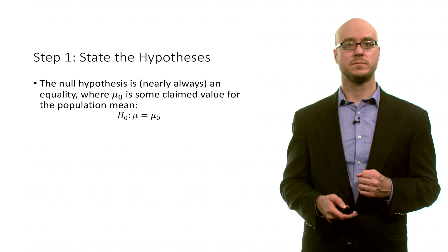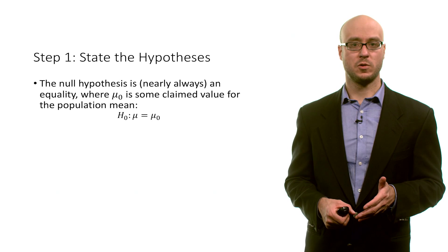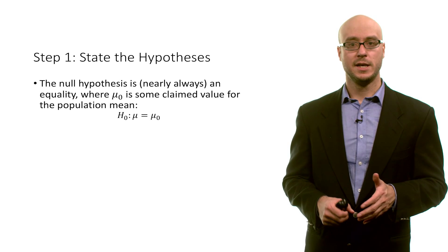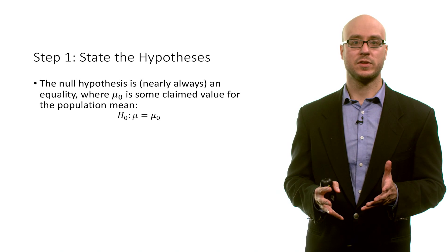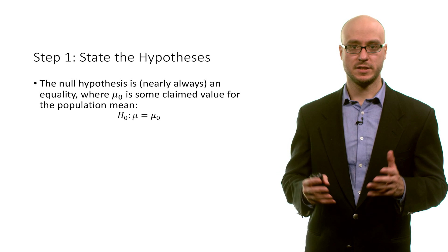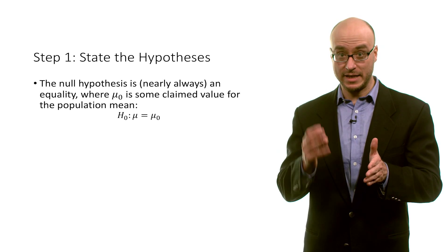So first of all, step one, state the hypotheses. The null hypothesis, it's almost always an equality. So we use mu naught, mu subscript 0, as some claimed value for the population mean. If you think the population mean is 50, let's say, the null is going to be mu equals 50. So mu naught is 50.